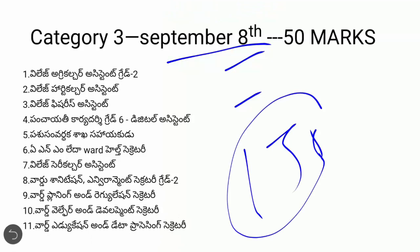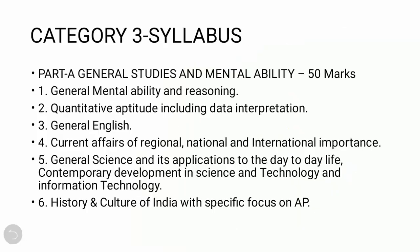If you have any questions about the post, you will have confusion about the notifications. If you have two questions, we will try to explain clearly in the video. First, you will cover Category 1, then Category 3. If you look at the 50 marks breakdown: first is general studies and mental abilities. For 50 marks, there is general mental ability and reasoning. You will have to explain clearly what is in Category 1, including topics in mental ability and reasoning.